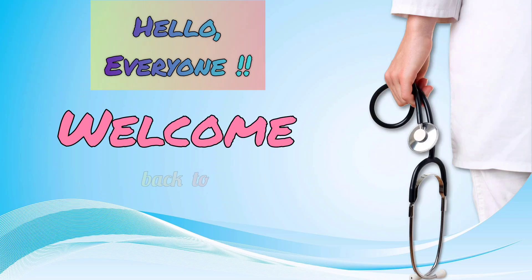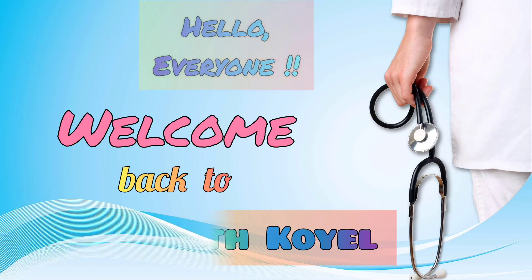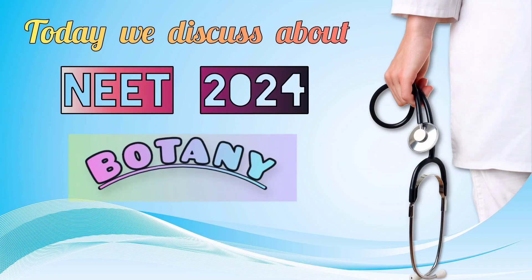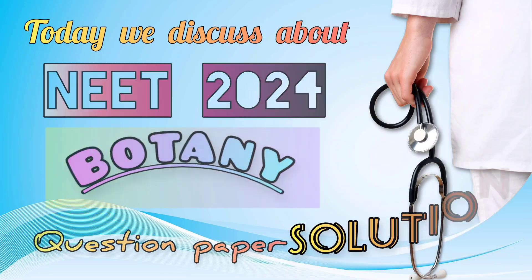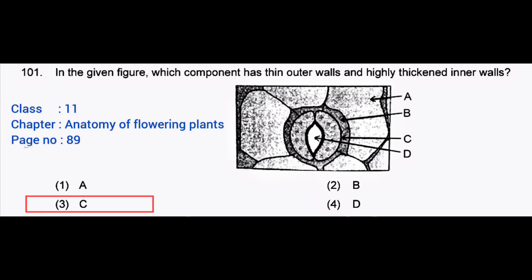Hello everyone, welcome back to Study with Quail. Today we discuss the NEET 2024 Botany question paper solution. First question: in the given figure, which component has thin outer walls and highly thickened inner walls? Correct answer: option 3, C.